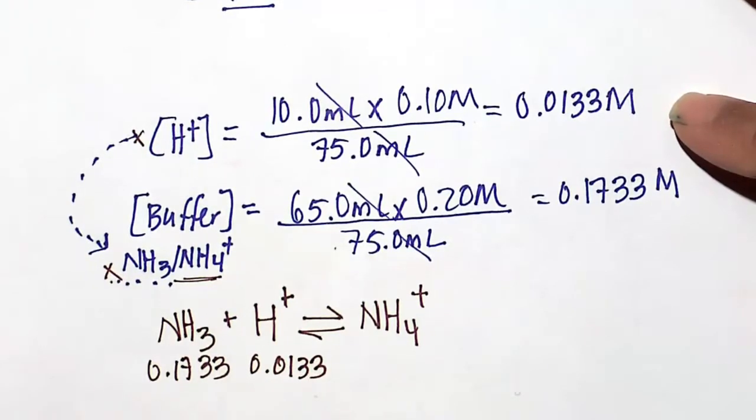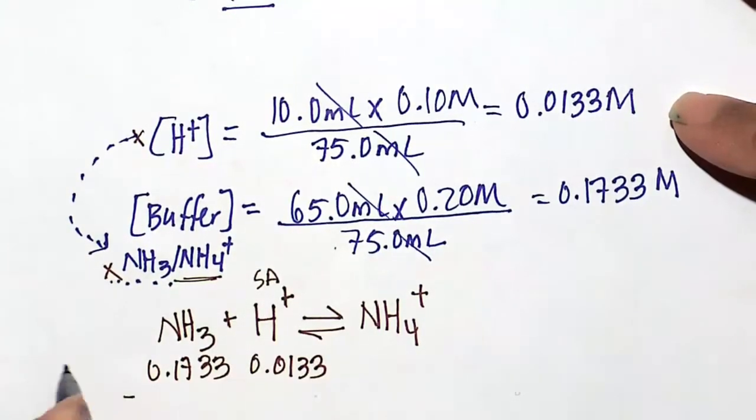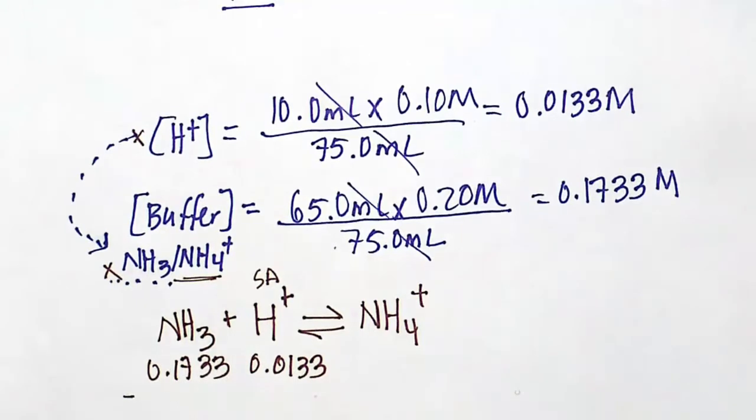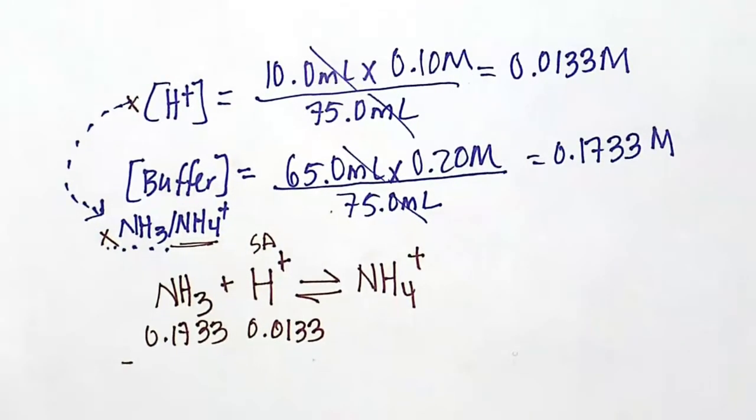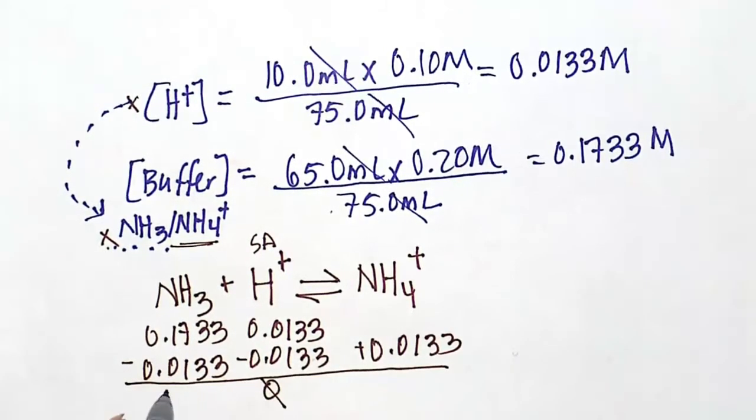So 0.1733 and 0.0133 of our strong acid. Actually, the NH4+ concentration is 0.1733 also. The strong acid, all of it will react. How much is all of it? All of it here is 0.0133. That is the extent to which all of the H+ will be consumed. Once again, HCl is a strong acid, 100% formation of H+, and all of it is going to protonate the NH3. All of it is 0.0133 worth of H+. And then the NH4+ concentration will also be 0.0133 as the reaction completely goes to the right-hand side.